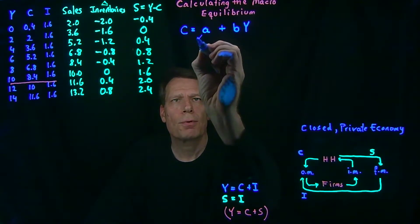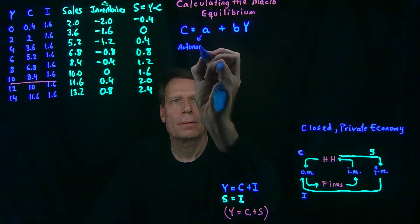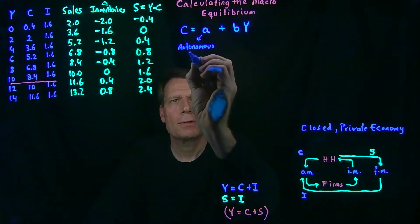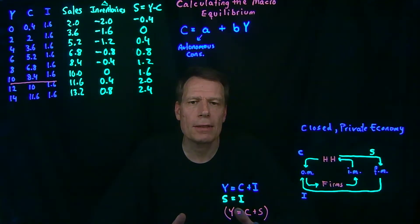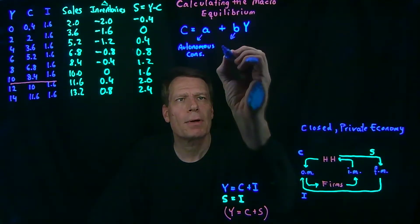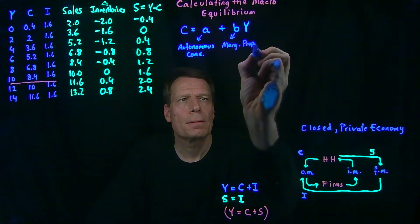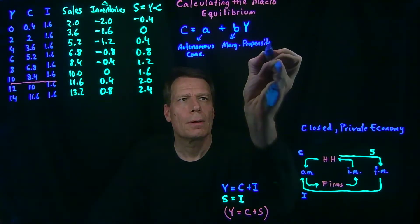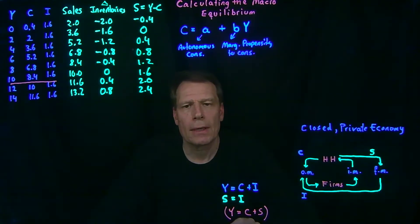We call that first parameter autonomous consumption. In other words, the level of consumption that's autonomous or independent of income. And we call the second parameter the marginal propensity to consume out of income. In other words, what fraction of income are you going to consume?